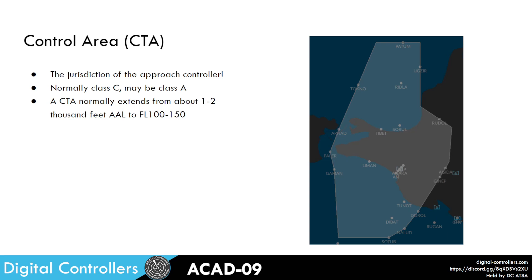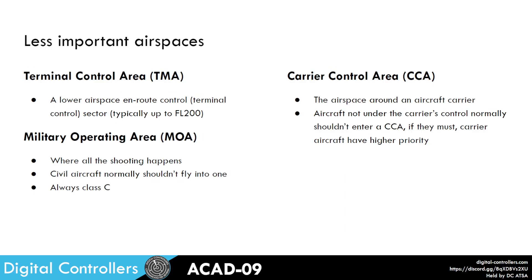Then we have a control area, which is the jurisdiction of the approach controller. This will be class Charlie but could be class Alpha as well. A CTA will normally extend from about 1 or 2000 feet above aerodrome level up to flight level 100 to 150. We then also have some less important airspace structures at this level.